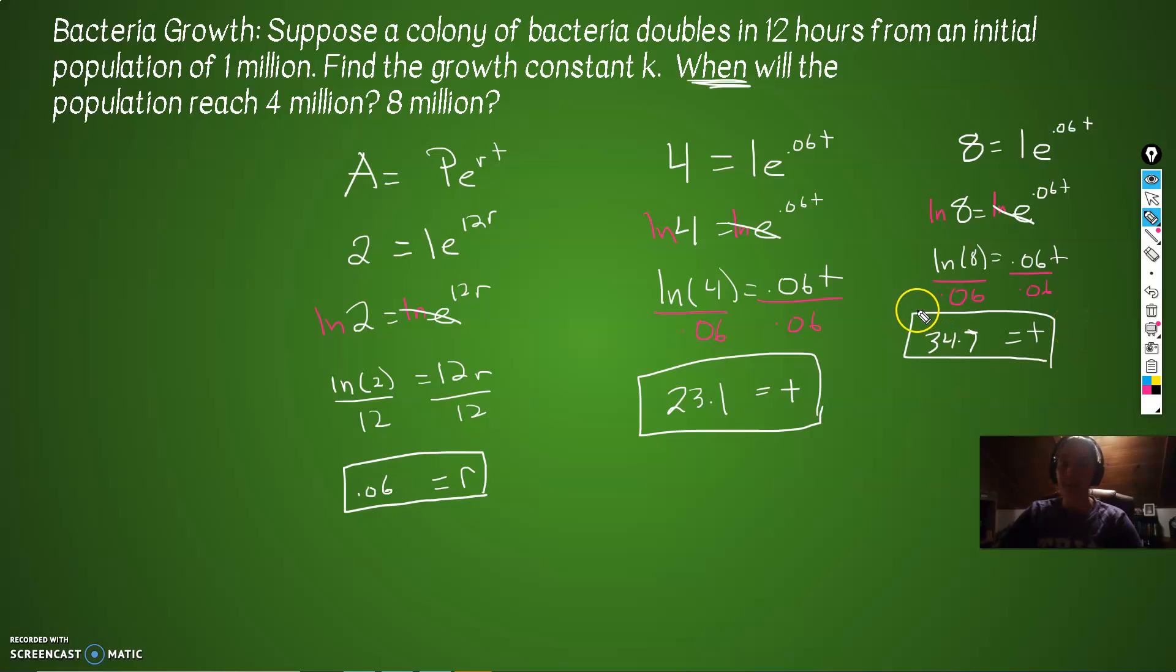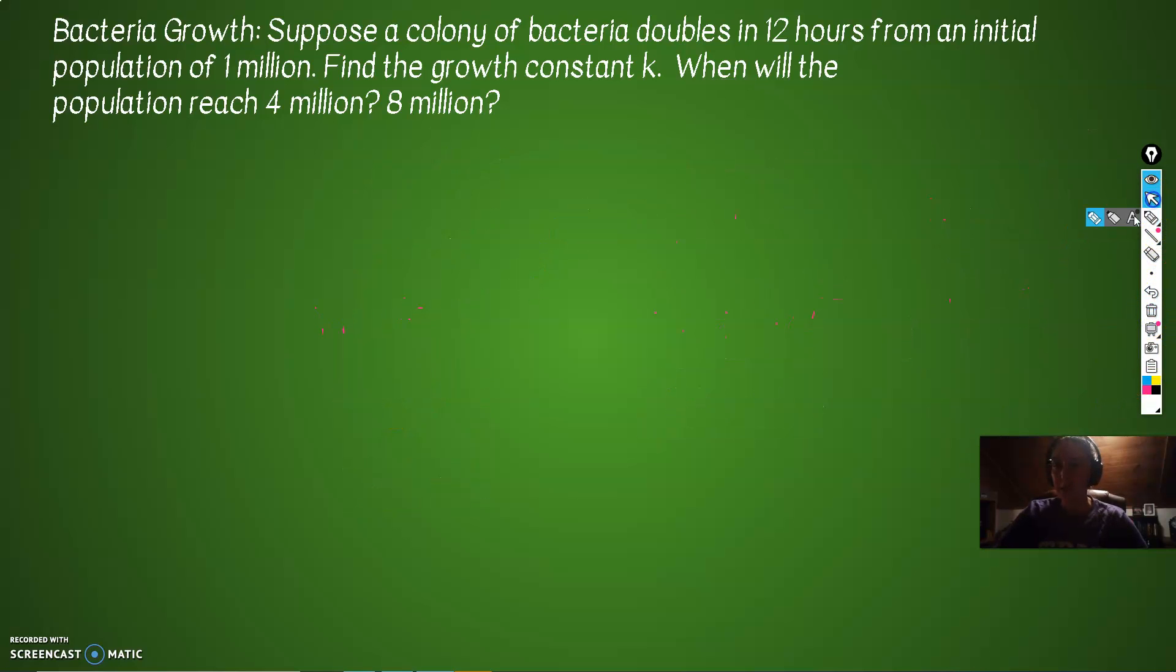And there we go. So if the growth constant isn't given, you can solve for it. You can solve for any of these pieces if you're given all the other pieces like you were here. And then you can answer whatever other questions they want you to answer. So let's go to our last example.